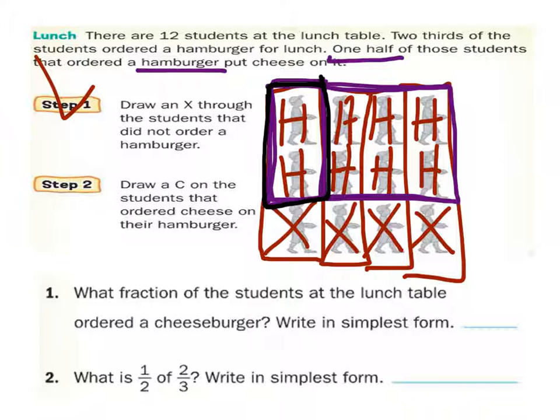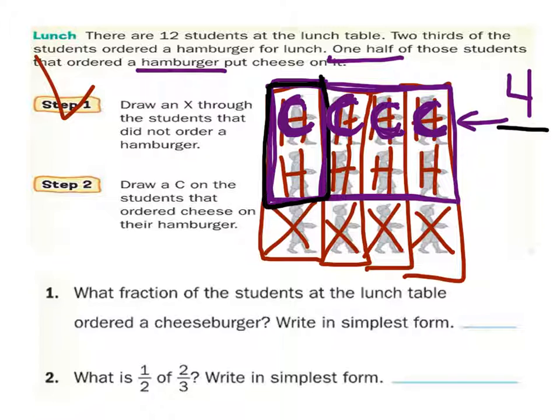So what we're going to do is we're going to look out of these two. Let's look just at these two. How many of these two got cheese on their hamburger? One. So we're going to look at this. We're going to say this guy got cheese.